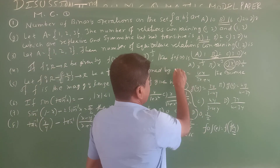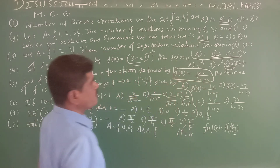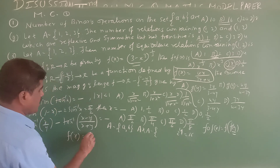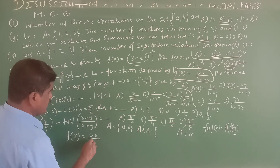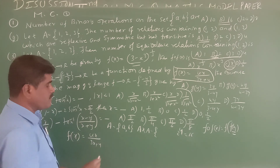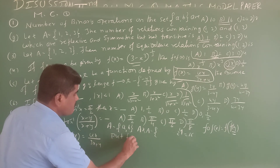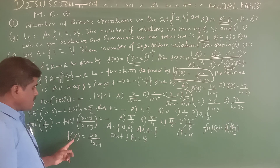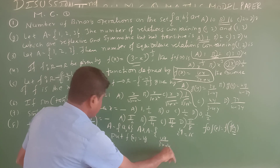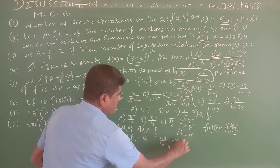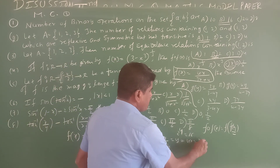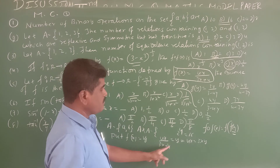Given f(x) = 4x/(3x+4), let f(x) = y. Then 4x/(3x+4) = y. Cross-multiplying gives 4x = y(3x+4), which expands to 4x = 3xy + 4y.